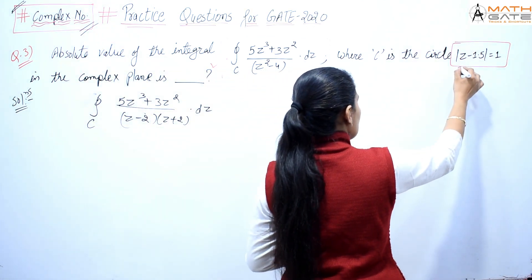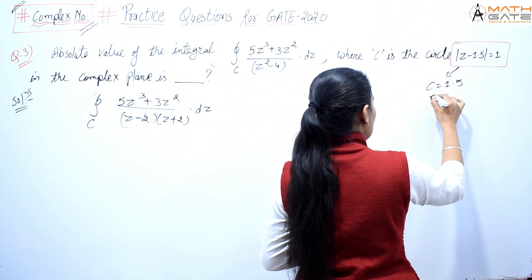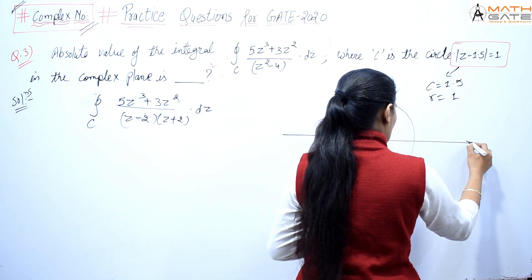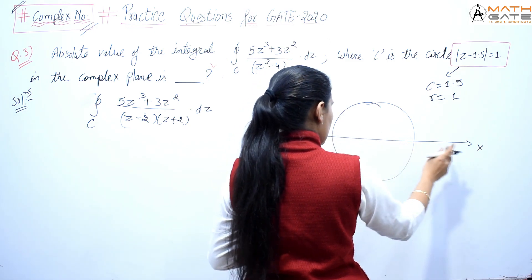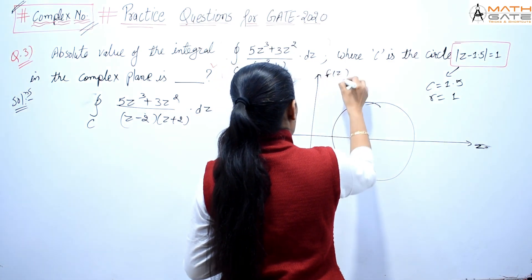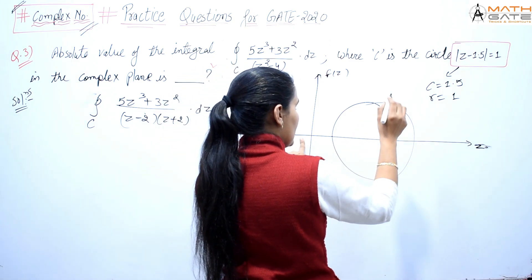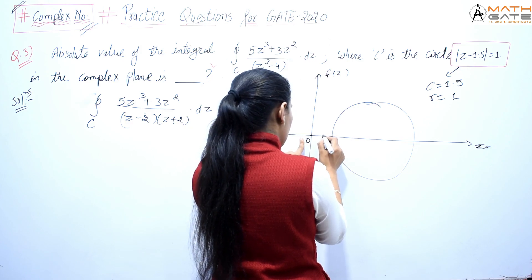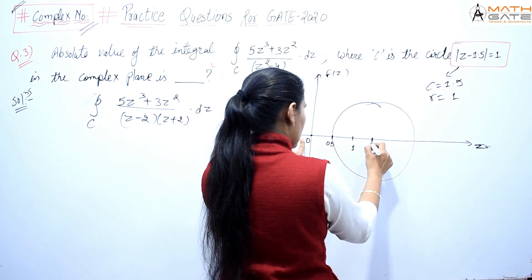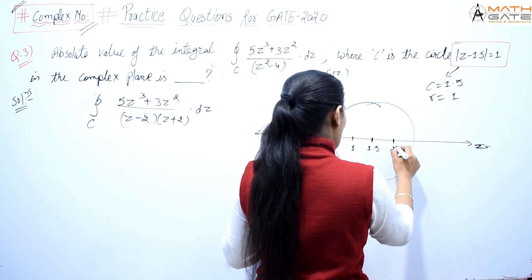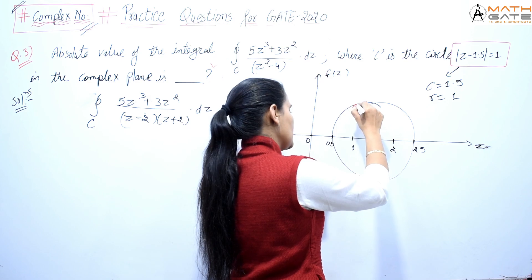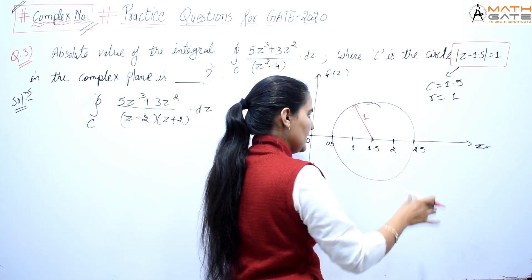Now, the circle given has center at 1.5 and radius 1. Let's draw it in the z-plane. The center is at 1.5 on the real axis. With radius 1, the circle extends from 0.5 to 2.5. So the circle goes from point 0.5 to 2.5 on the real axis, with center at 1.5.